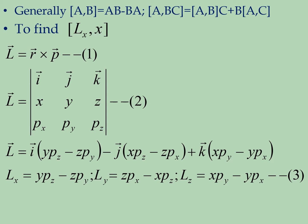So we can write L as: i(YPz minus ZPy) minus j(XPz minus ZPx) plus k(XPy minus YPx). So the angular momentum component along x is Lx = YPz minus ZPy, along y is Ly = ZPx minus XPz, and along z is Lz = XPy minus YPx.